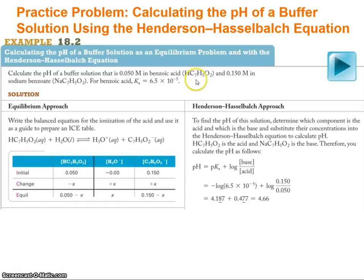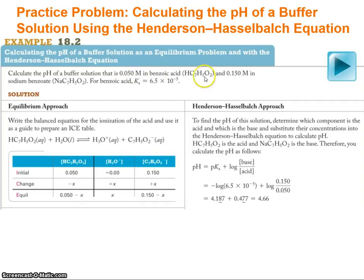We're going to adjust that. I've got a little bit more base form than acid form, so it's going to be a little bit higher than the pKa would suggest — a little bit more basic. But we can set it up using the equilibrium approach. We've got 0.05 molar benzoic acid and 0.15 molar benzoate.